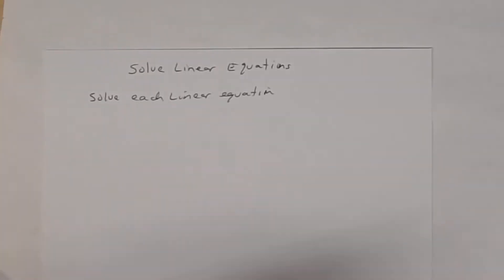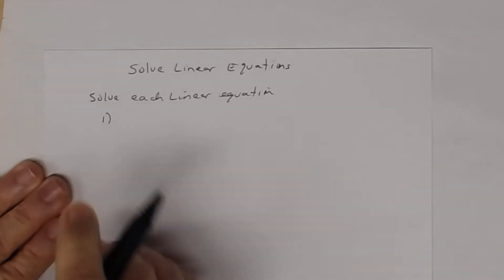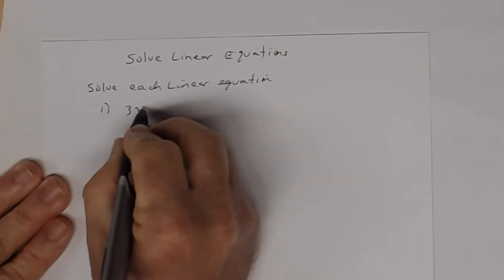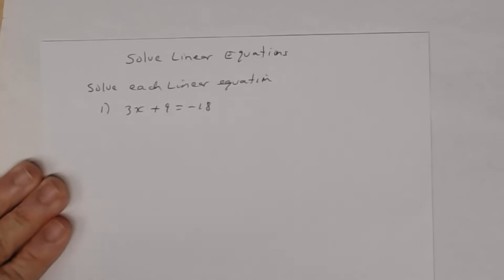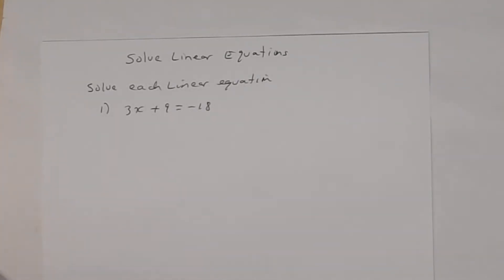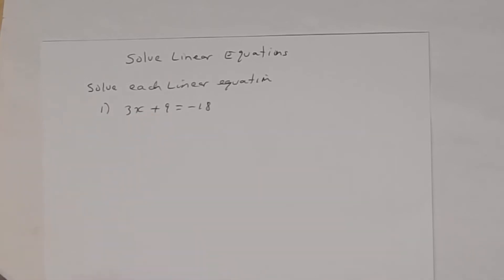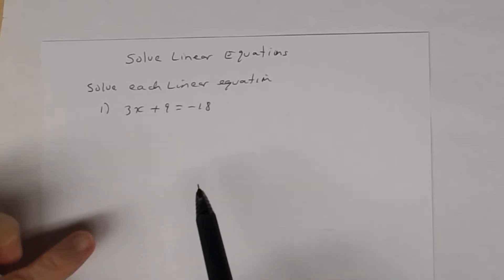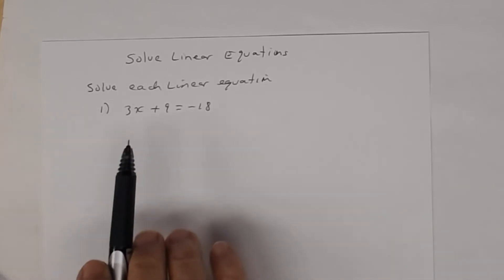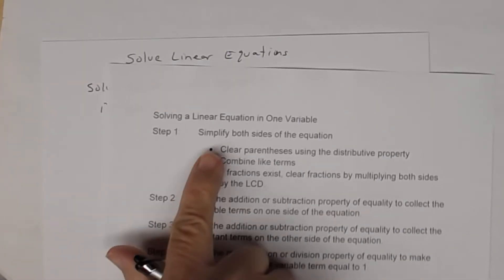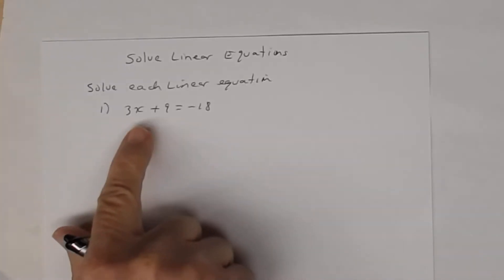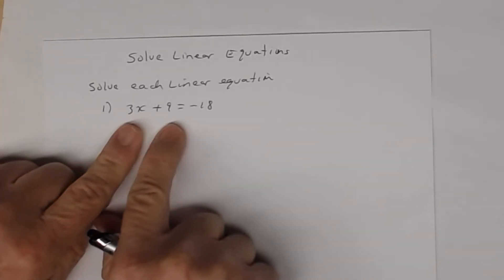Let's go through these steps with the first example: 3x + 9 = -18. You want to do this algebraically — it's really difficult to intuitively determine the answer without doing so. In previous lessons, you talked about the addition, subtraction, multiplication, and division properties of equality and writing equivalent equations. For this problem, step one doesn't apply — there's nothing to simplify, no parentheses, no fractions. So we go to step two.